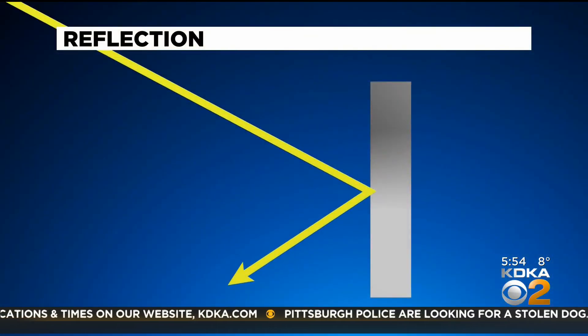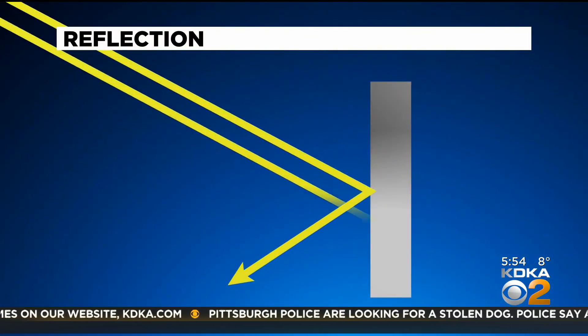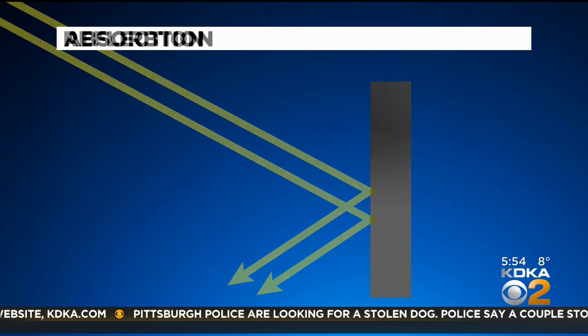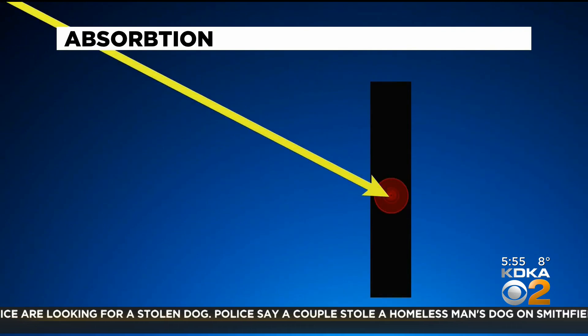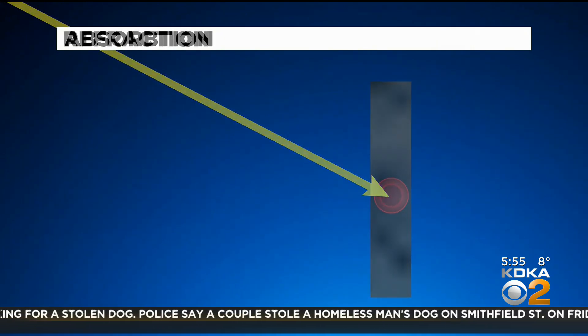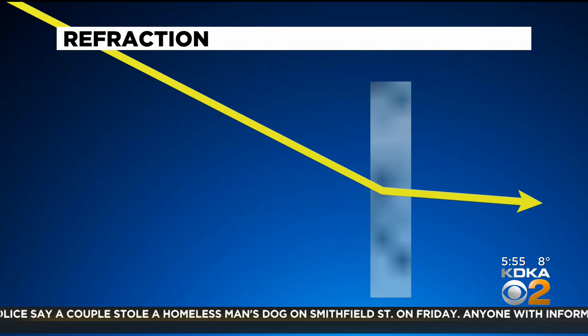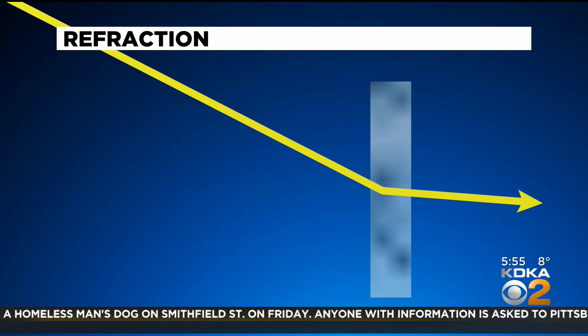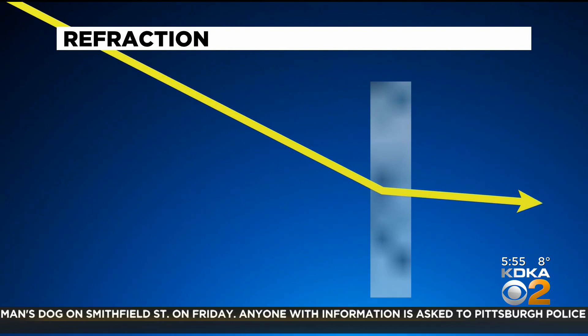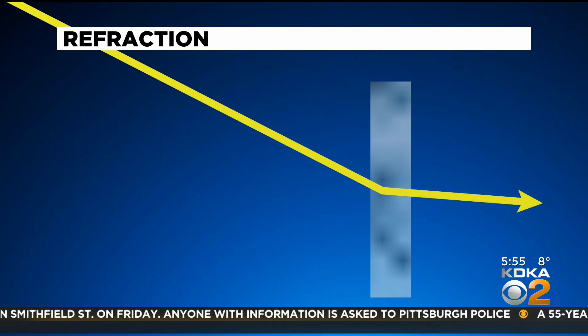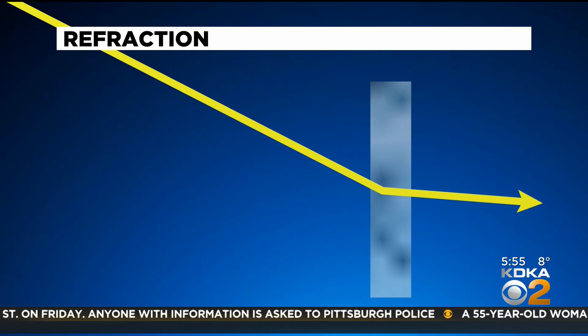Light can bounce off things — we call this reflection. Light can be absorbed by objects, which happens with darker surfaces. And light can pass through some things, but it's bent when it does so. This transmission is called refraction.